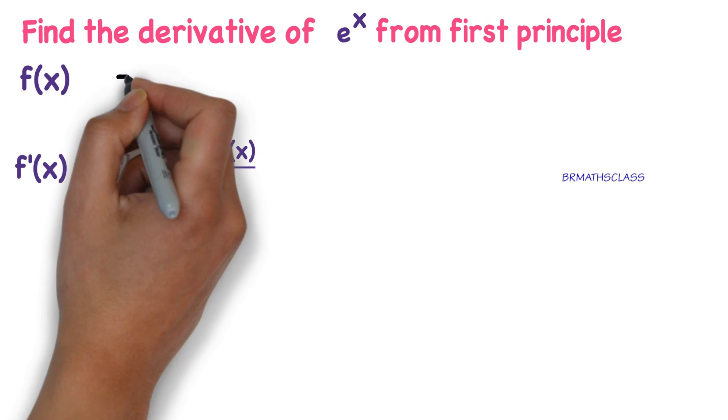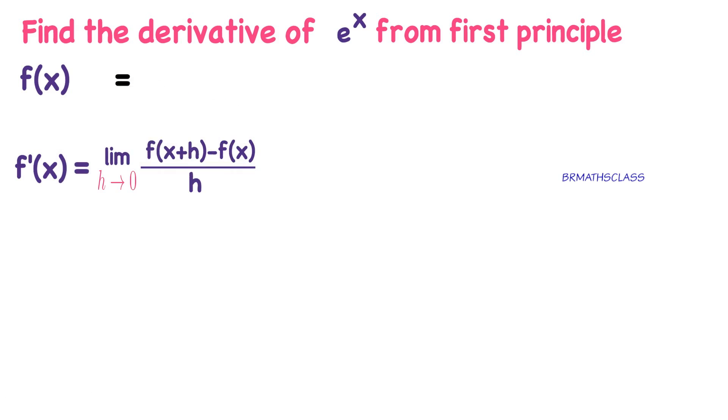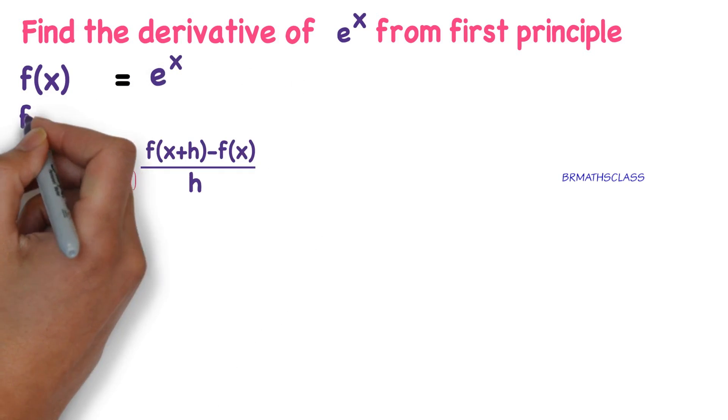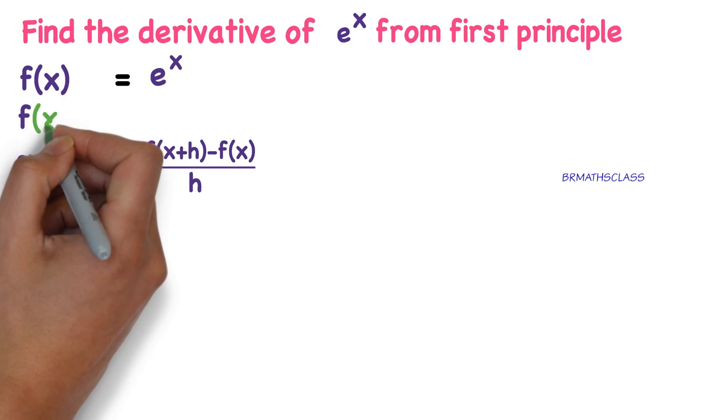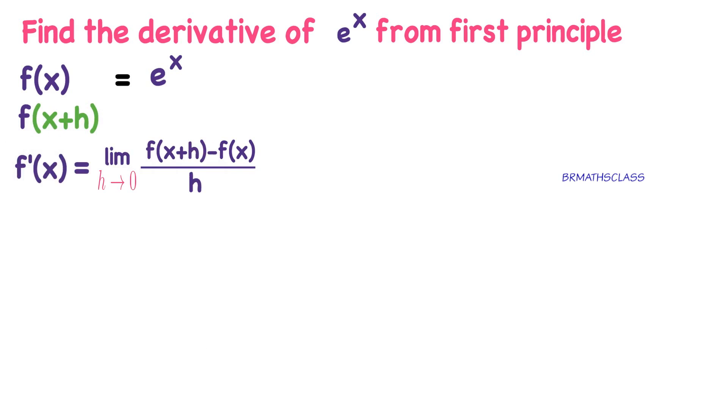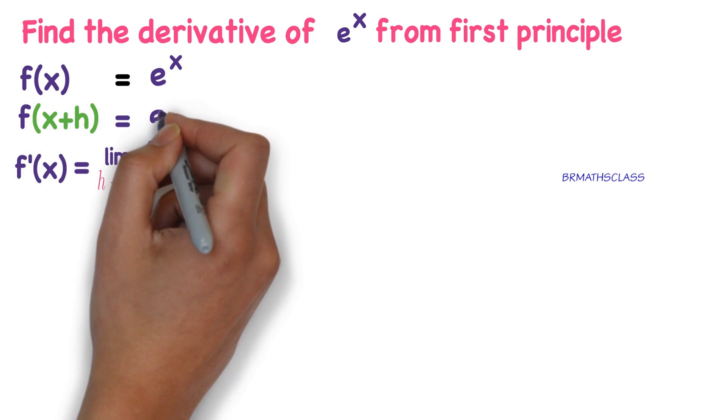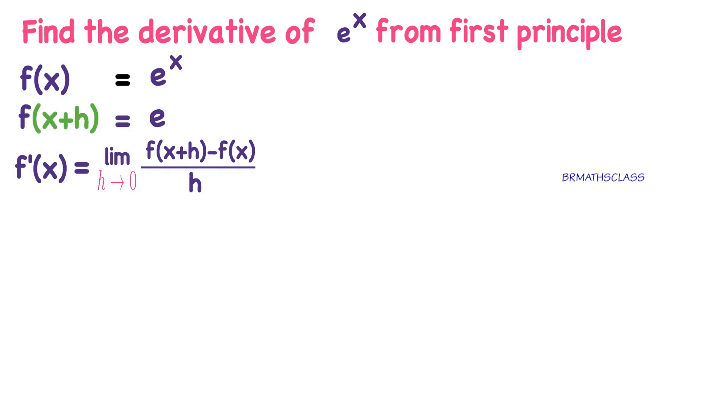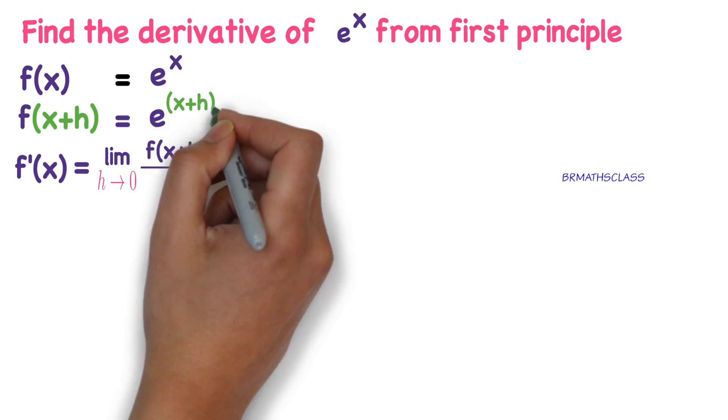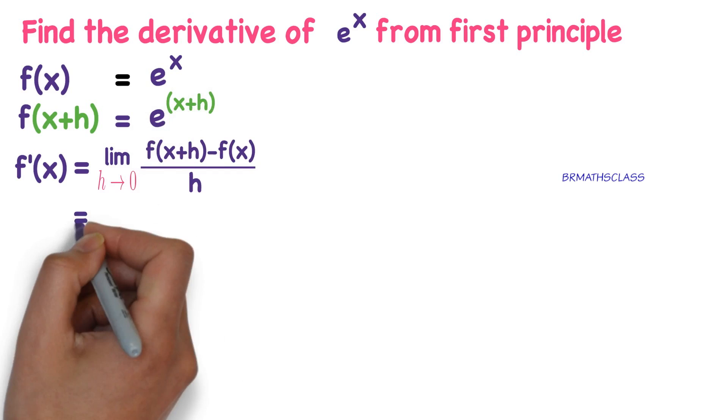Now, which function derivative you want to find, you take that function as f(x). What is f(x)? f(x) is e^x. Now you calculate f(x+h). What is f(x+h)? Just replace x with x+h. So f(x+h) is e^(x+h). Now substitute these two things here.